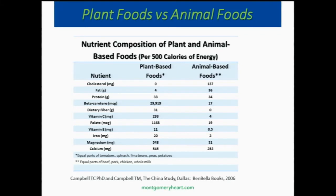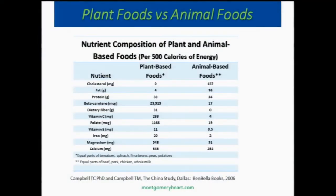If you look at this comparison of plant foods to animal foods, comparing 500 calories of each — looking at cholesterol and fat — animal-based foods are clearly higher. Cholesterol is zero in plants, while animal-based foods have about 137 milligrams per 500 calories. Broccoli and spinach don't have a liver, so they don't produce cholesterol. For fat, 500 calories of average plant foods have about 4 grams compared to about 36 grams in animal foods.